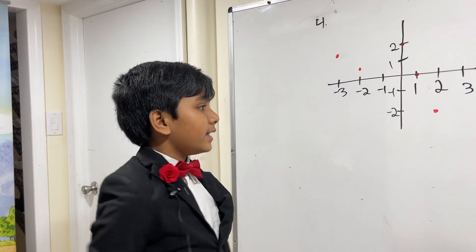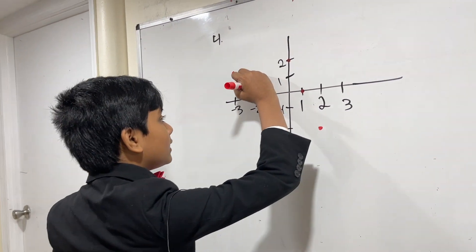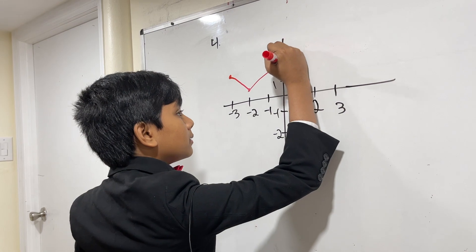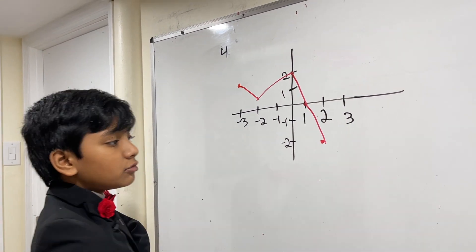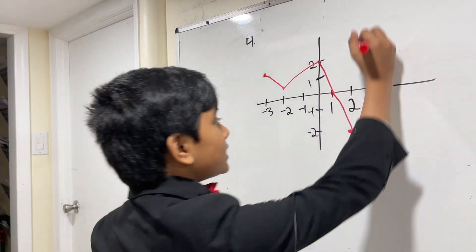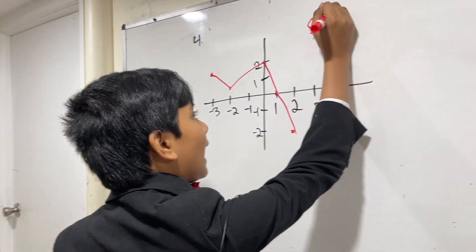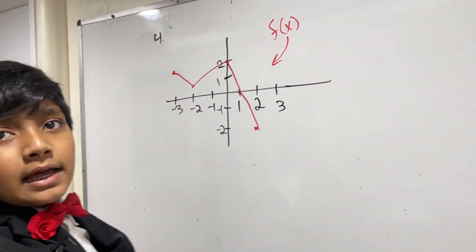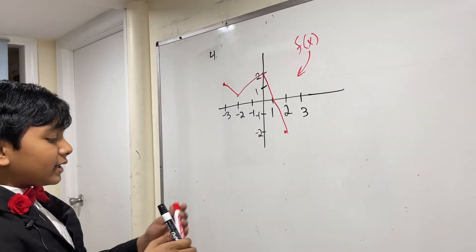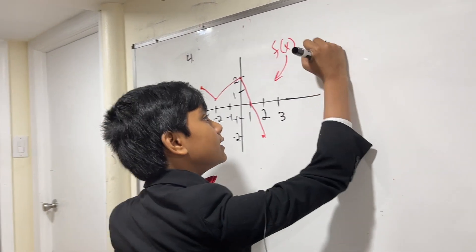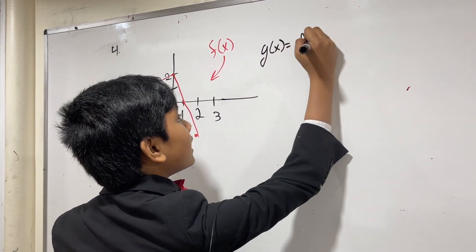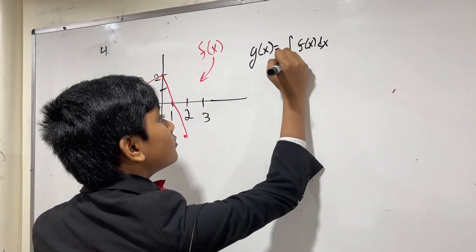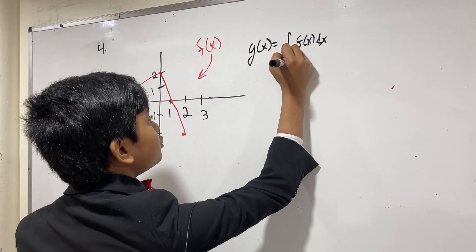Alright, so now let's draw it. We get bing, bong, bang, and bang once again. So, this is the function defined as f of x, and the function g of x is equivalent to the integral of f of x from minus 2 to x.